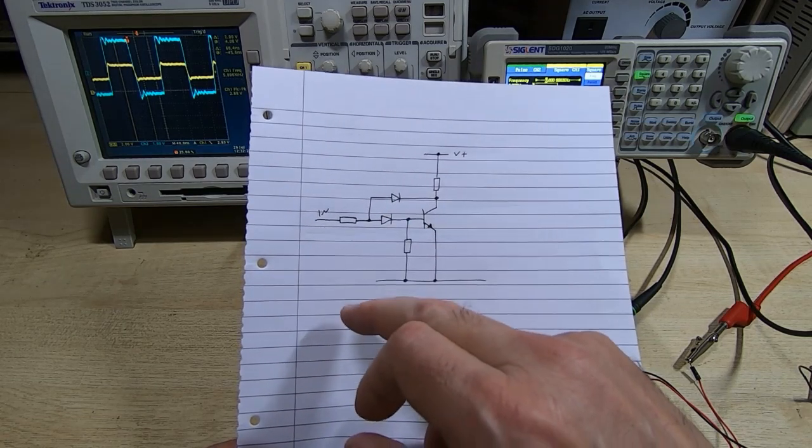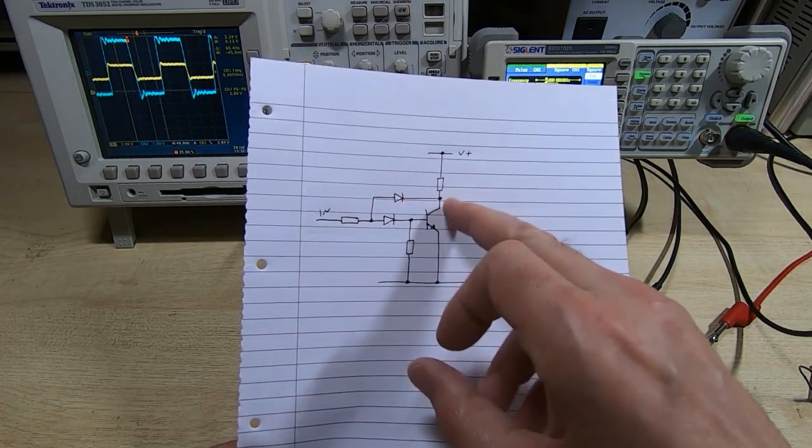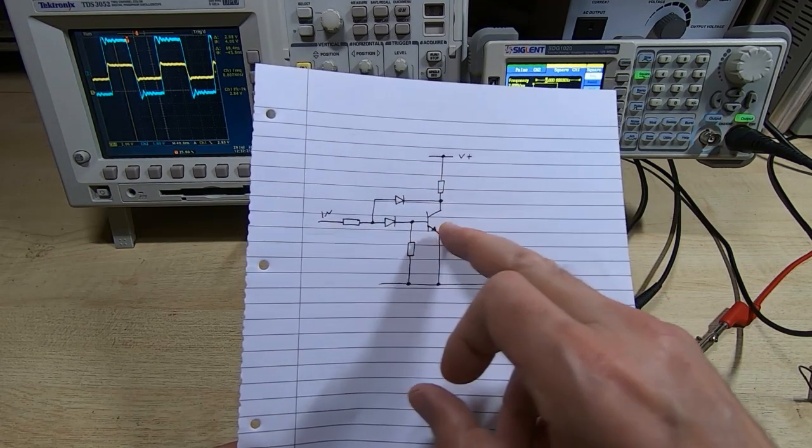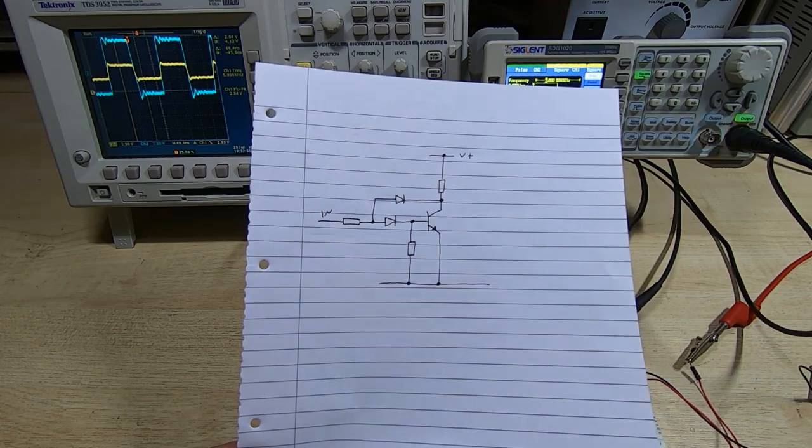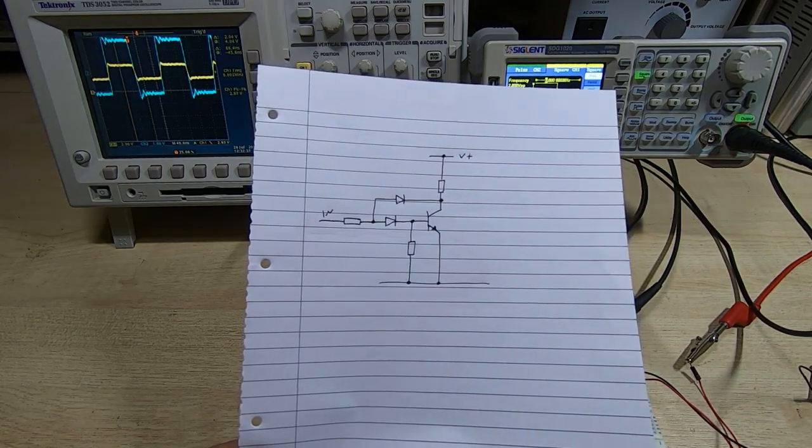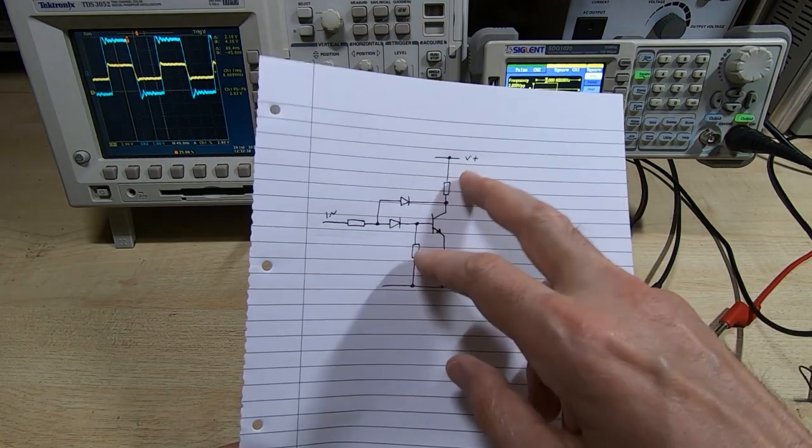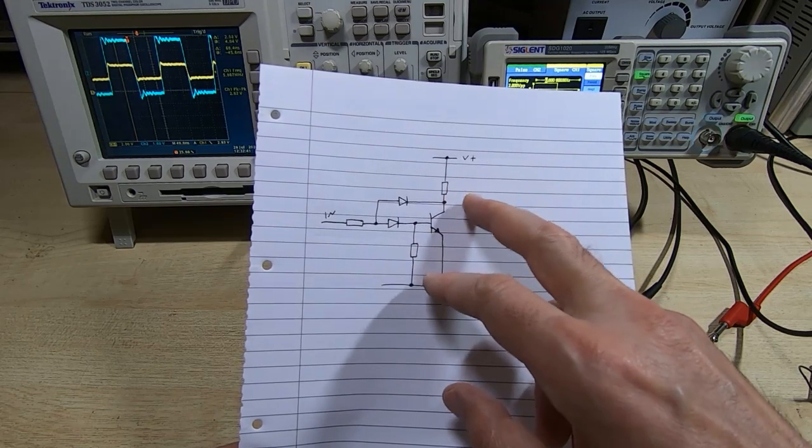And all I've done is taken out the 1k resistor, added a clamping diode and a second clamp. And the way this now works is rather than allowing the base to just keep rising and rising as the transistor is turned on, this clamps the transistor such that it never fully saturates.